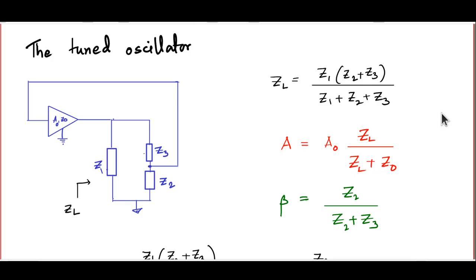In the last lecture, we studied the basic theory of oscillator circuits. We saw that for an amplifier with positive feedback to oscillate without an input signal, what you need is to satisfy the Barkhausen criterion: A, the gain of the amplifier, times beta, the feedback fraction, must be 1.